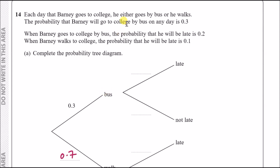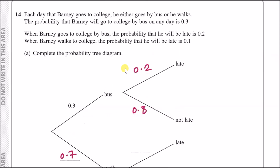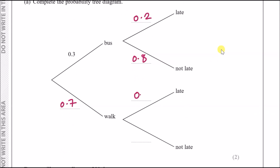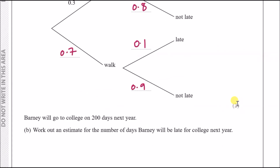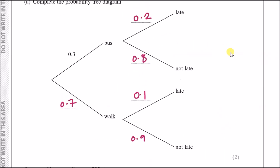The branches must always add to 1. So bus branch: late = 0.2, not late = 0.8. Walk branch: late = 0.1, not late = 0.9. Now we need to estimate the number of days Barney is late over 200 college days next year.